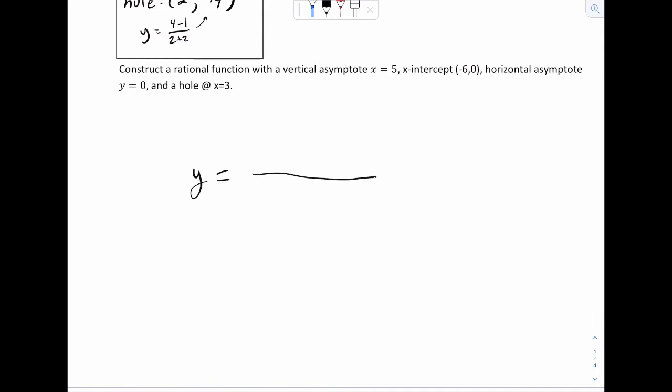And I'm going to start here. The VA is x equals 5. Because that would tell me the bottom part has to have an x minus 5 here. Now it says the x intercept is negative 6. Now that's interesting because that tells me on the top that I should have an x plus 6. So note how the vertical asymptote is telling information about the bottom, and the x intercept is telling information on the top.